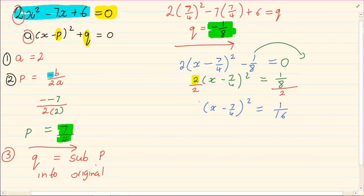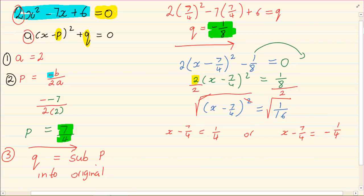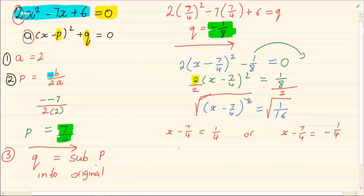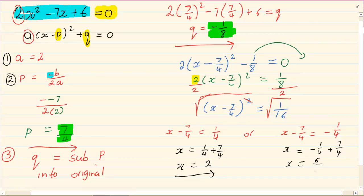Now to get rid of the square we are going to root both sides. So x minus 7 over 4 equals plus or minus the square root. Remember when you root something you have a positive and negative answer. So when we solve for x, x is going to equal 1 quarter plus 7 over 4, which means x equals 2. And on the other side, x is equal to minus a quarter plus 7 over 4, so x equals 6 over 4, which means x equals 1 and a half.